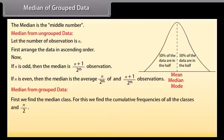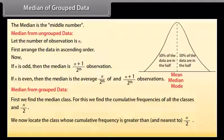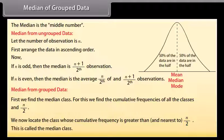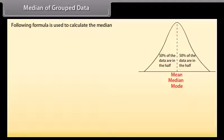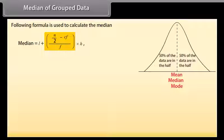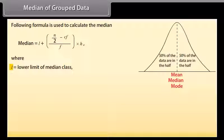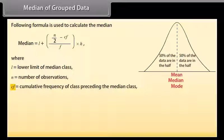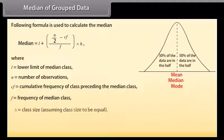Median from grouped data: first find the median class by finding the cumulative frequencies of all classes and n divided by 2. Locate the class whose cumulative frequency is greater than and nearest to n divided by 2 — this is the median class. The formula is: L plus (n divided by 2 minus CF) divided by F, multiplied by H. Where L is the lower limit of the median class, N is the number of observations, CF is the cumulative frequency of the class preceding the median class, F is the frequency of the median class, and H is the class size.